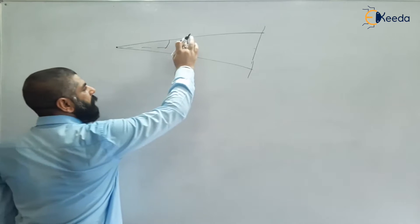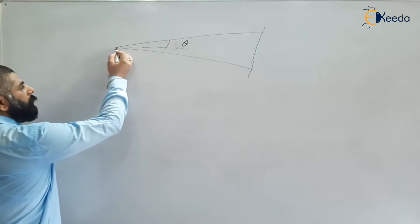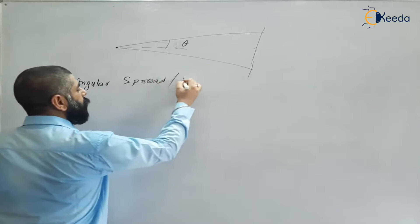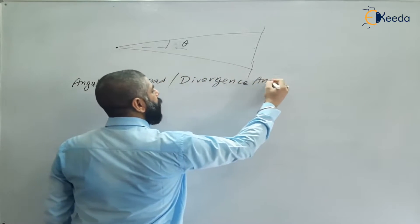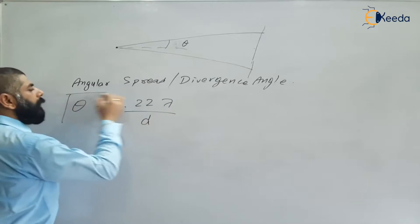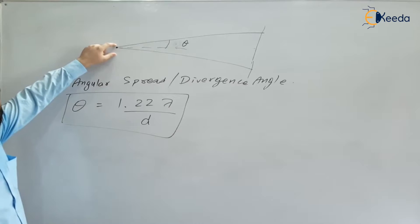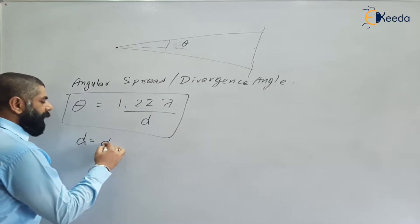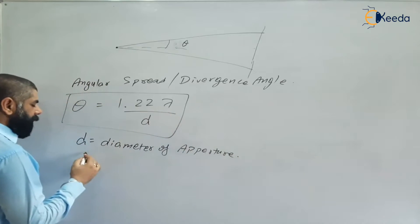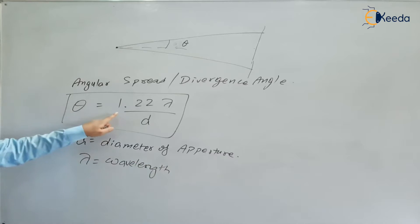The divergence angle, represented by theta (θ), indicates to what extent the laser will diverge. This angular spread, also called divergence angle, is given by θ = 1.22λ/d, where d is the diameter of the aperture (aperture diameter) and λ is the wavelength of the laser light.